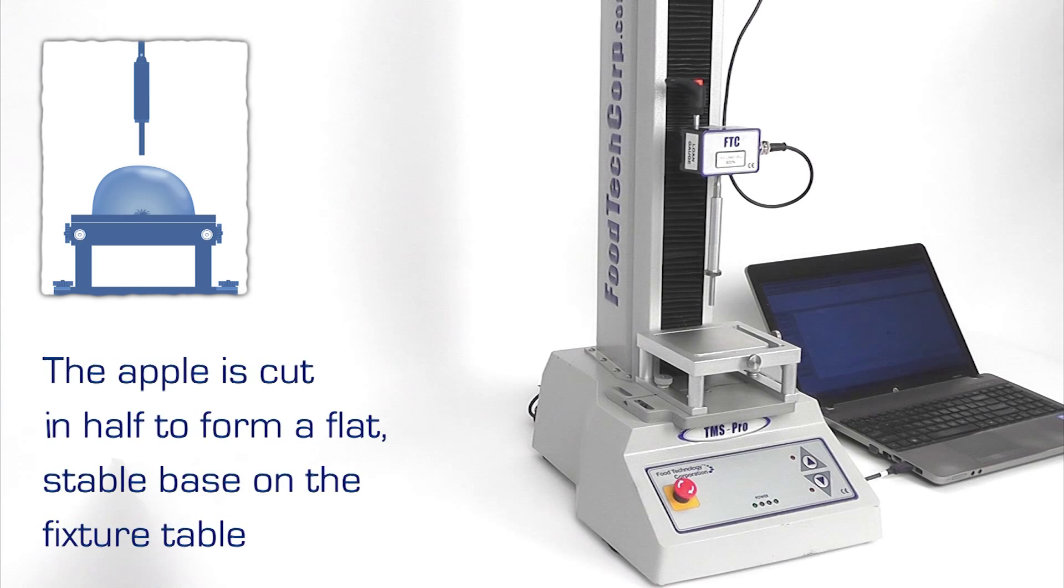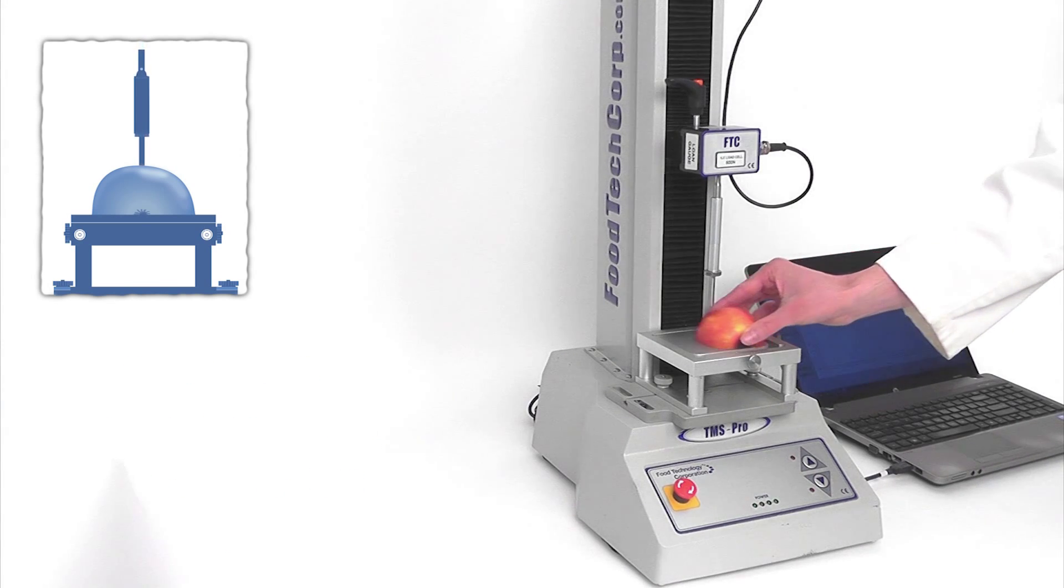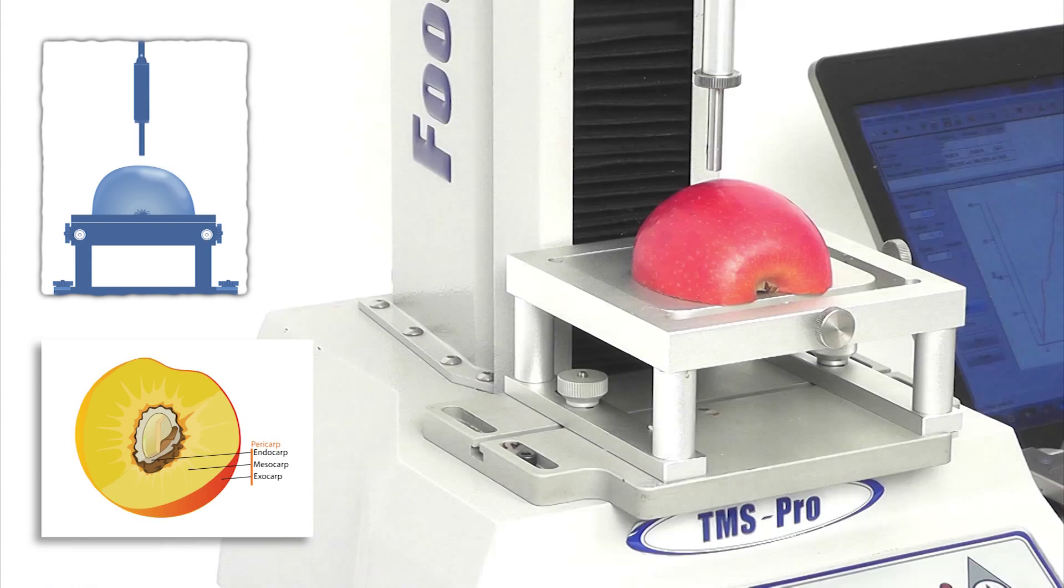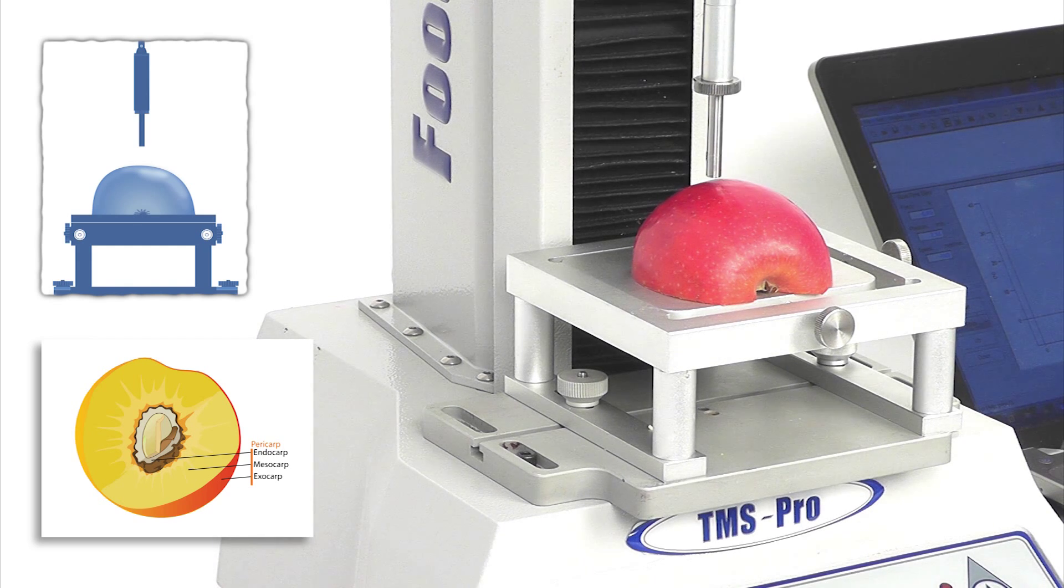The test procedure will lower the probe to detect a touch on the sample and zero the readings. The apple is then penetrated at constant speed. The skin may also be peeled at the point of contact to focus solely on the behavior of the interior flesh.